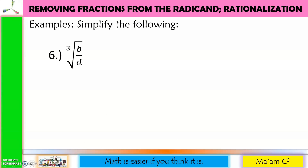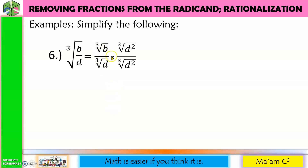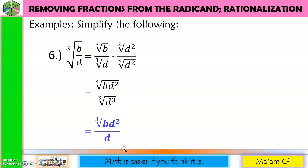Number 6: cube root of b divided by d. Separate numerator and denominator. The index is 3 and the exponent of d is 1, so I need 2 more to make it 3. Multiply numerator and denominator by the cube root of d squared. Cube root of b times cube root of d squared is the cube root of b·d squared. For the denominator, 1 + 2 = 3, giving the cube root of d cubed. We cancel cube root and exponent 3. Final answer: cube root of b·d² over d — no more radical in the denominator.